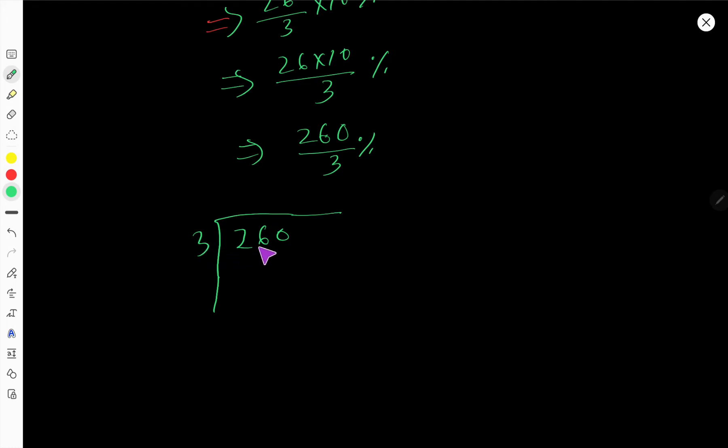3 goes into 26 how many times? 8 times. 8 times 3 is 24. If you subtract, you get 2. Bring down this 0. 3 goes into 20, 6 times. 6 times 3 is 18, subtract to get 2.